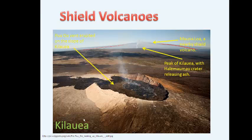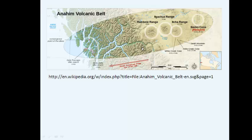What we're looking at in this diagram, in the foreground, is Kilauea — one of the most active volcanoes in the world right now. We've got the Pu'u vent erupting on the slope of Kilauea, and the peak of Kilauea is just behind this ridge. Behind it, we see another active shield volcano called Mauna Loa. The smoke is actually coming from Kilauea's peak. We do have some shield volcanoes in our area — in British Columbia, we have the Anaheim Belt, located over a hot spot in BC.